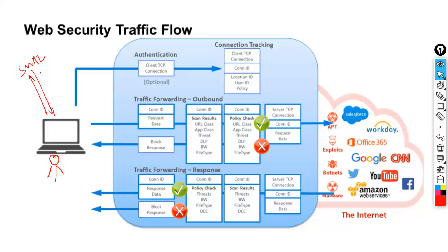Once authentication is done, the user establishes a TCP client connection. They reach out to the nearest ZEN and a TCP connection is allocated. At this stage we are still dealing with control information, not data. After the TCP client connection is available, a connection ID must be allocated — without a connection ID, packets cannot be processed through ZEN. Connection tracking happens based on the central authority, and a session is created with a connection ID assigned.